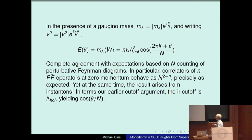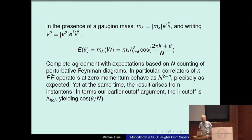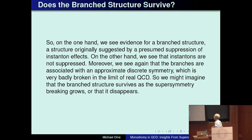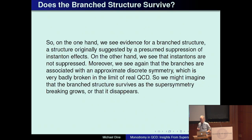The question arises: does the branch structure survive? On the one hand, we see evidence for this branch structure. On the other hand, we see that instantons are not suppressed. Moreover, the branch structure is associated with an approximate discrete symmetry which is very badly broken if we consider the limit of real QCD. So again we could imagine the logical possibilities that these branches survive or that they disappear in the large N limit.